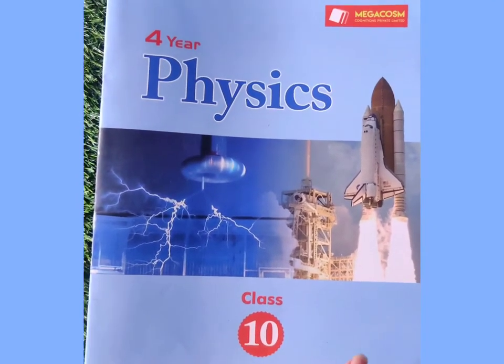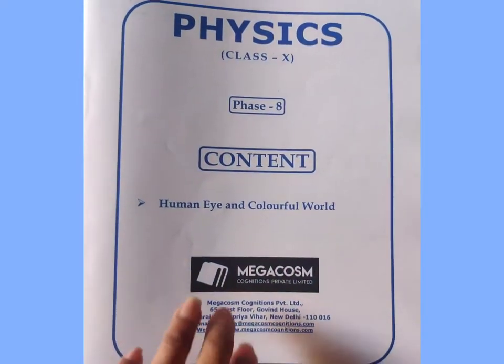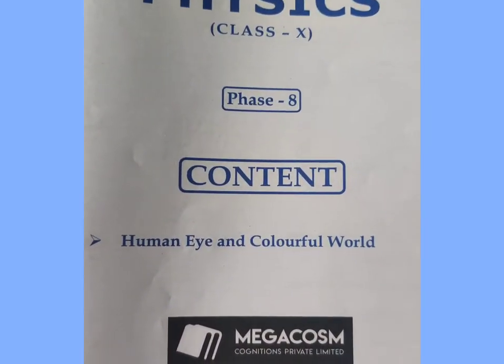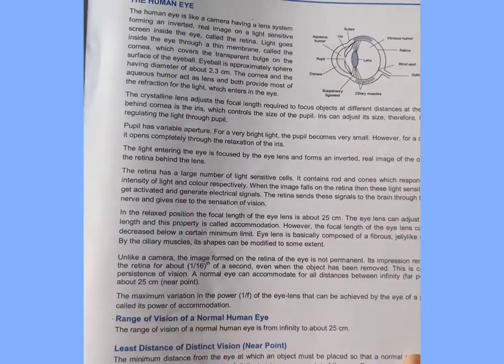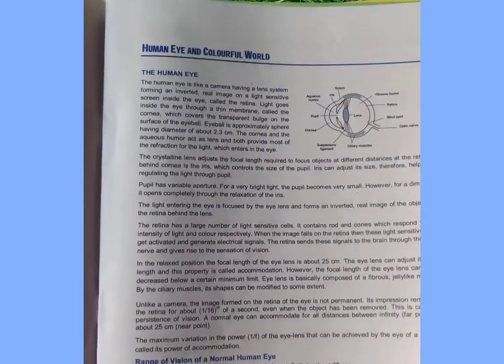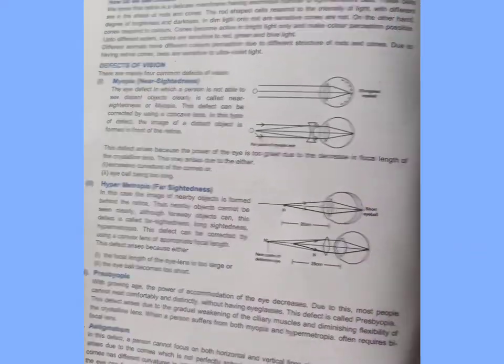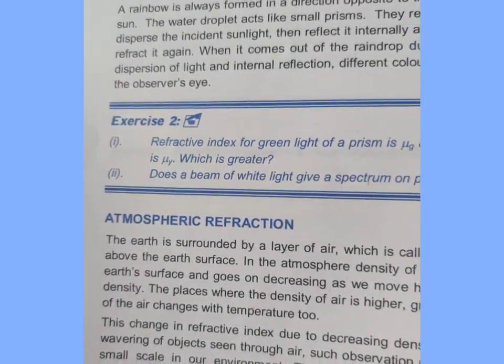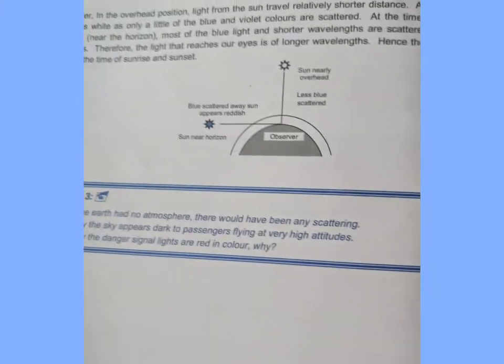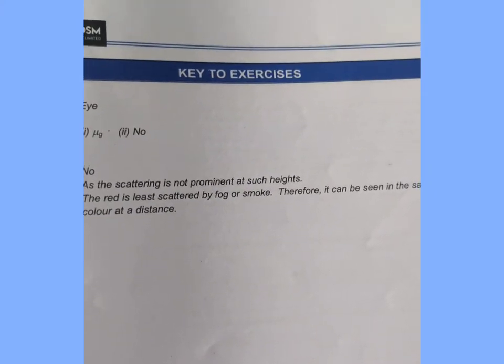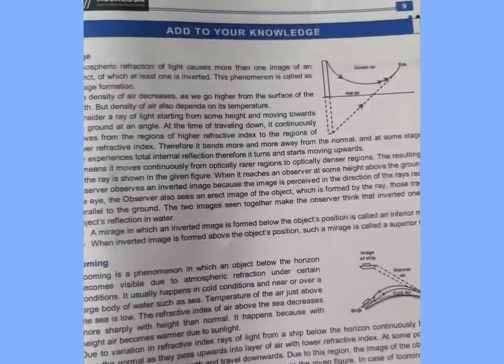Let's start from Physics. Here in Class 10th Phase 8, the topic covered is Human Eye and Colorful World. In every book, first of all you have a theoretical part — as you can see this is the Human Eye theoretical part — with some exercise questions. Then you have a theoretical part with answers. After that you have a revision formula and concept, and an 'Add to Your Knowledge' section.